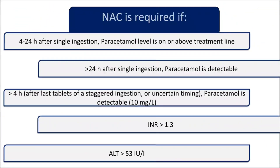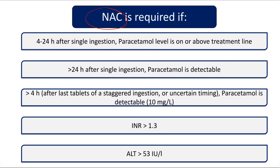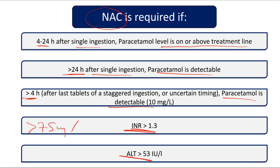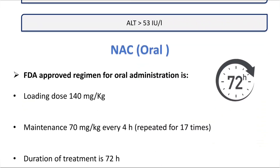The antidote is N-acetylcysteine. Indications: patient arrives four to 24 hours after single ingestion with paracetamol level on or above the treatment line; more than 24 hours after single ingestion with detectable paracetamol; or more than four hours with detectable paracetamol (≥10 mg/L), INR >1.3, or ALT >45–53. In our emergency department, where drug levels may be unavailable, we start N-acetylcysteine for all ingestions above 75 mg/kg regardless of level.